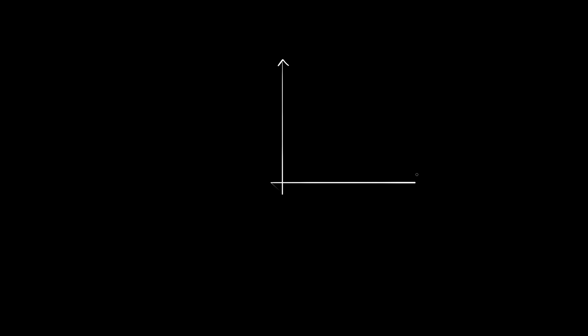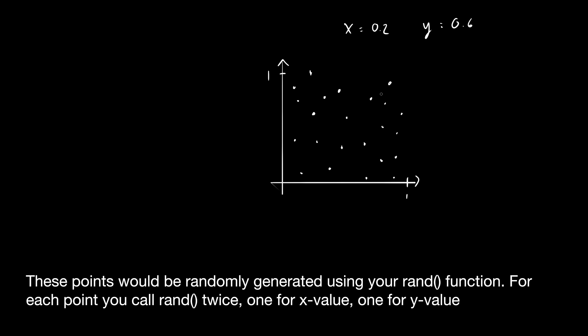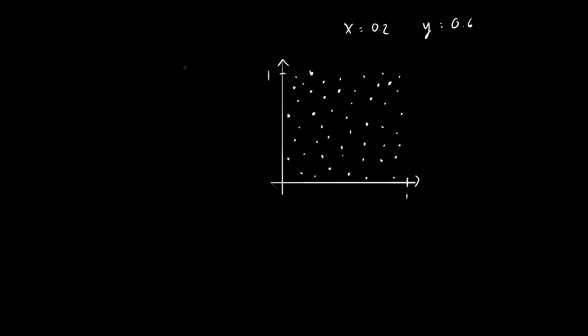So the basic idea is to randomly draw points from a one-by-one square, or like a one-by-one grid, since you can call the random function twice. You get two numbers — one for the x-axis and one for the y-axis. So for example, if x becomes 0.2 and y becomes 0.6, then you get a point somewhere here. So why don't we draw a few more of these? Now I'm going to give you a hint — I'm going to draw something, and I think you'll know how to do it.